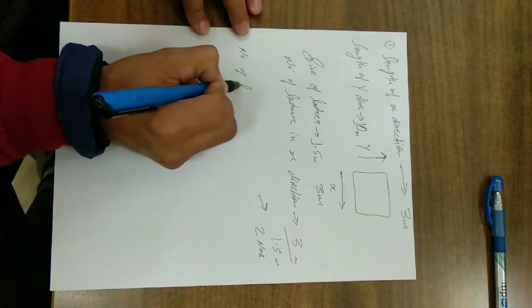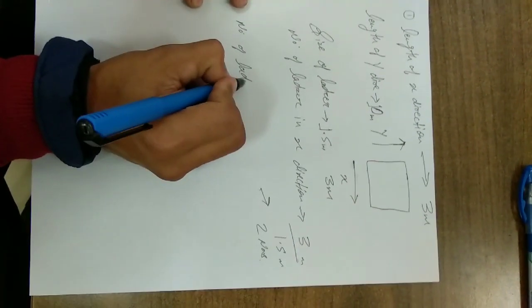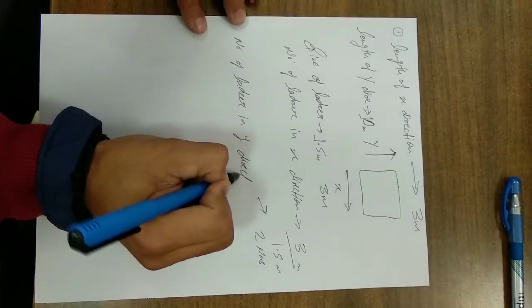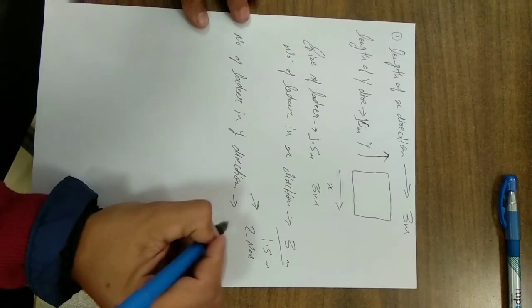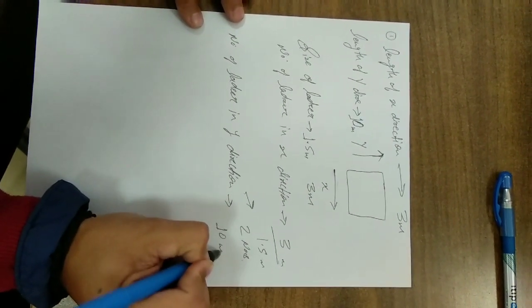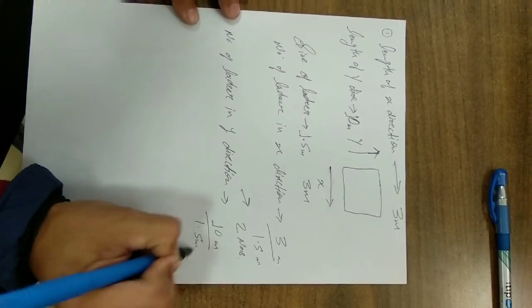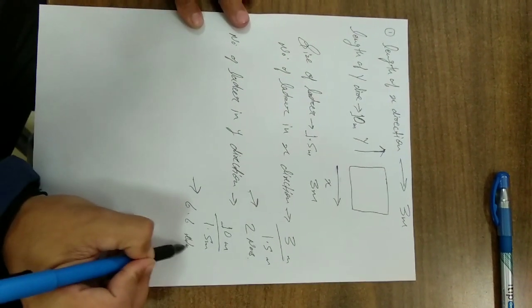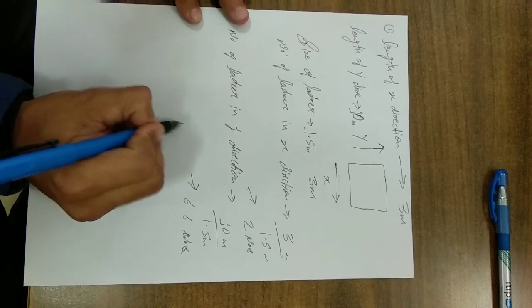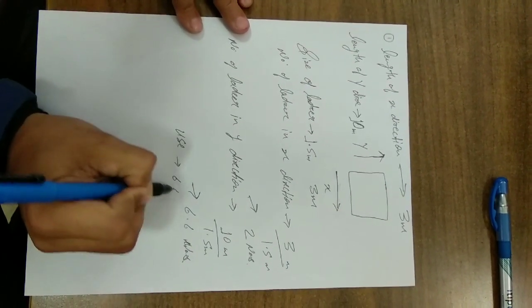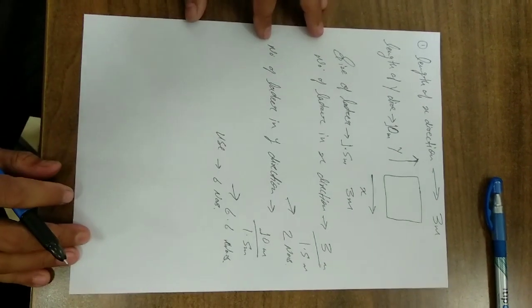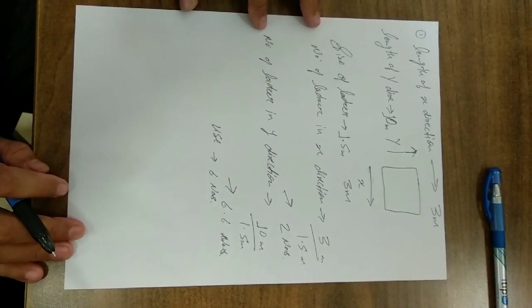Number of lasers in Y direction is 10 meter divided by 1.5 meter, which will be 6.6 meters.